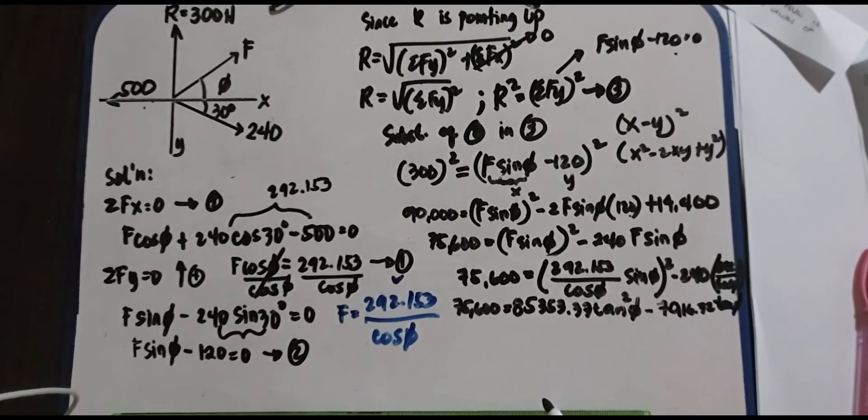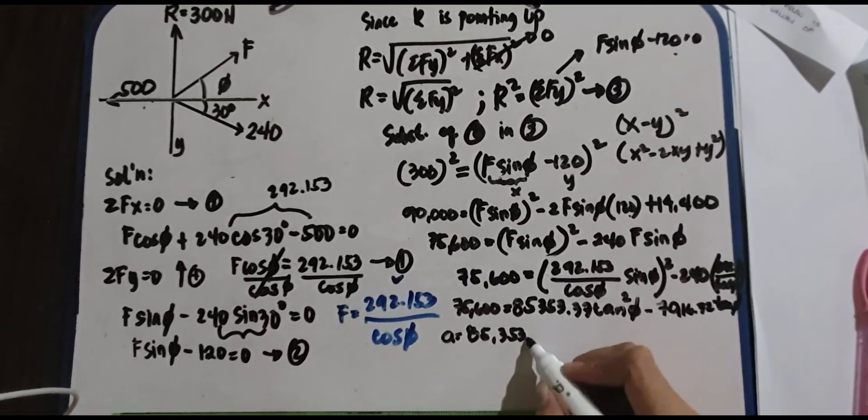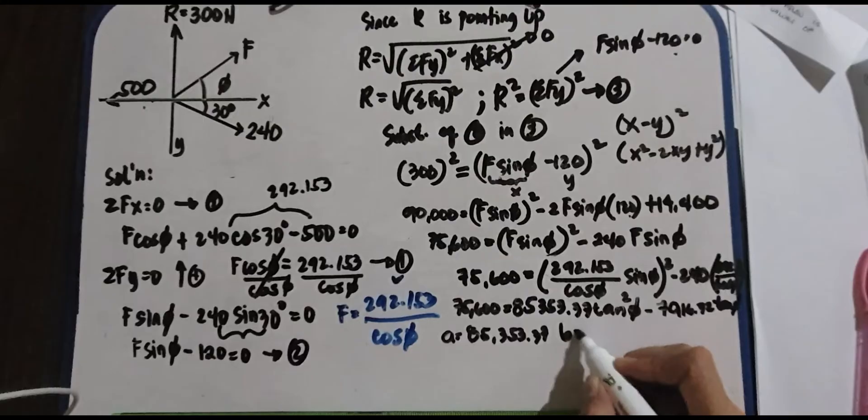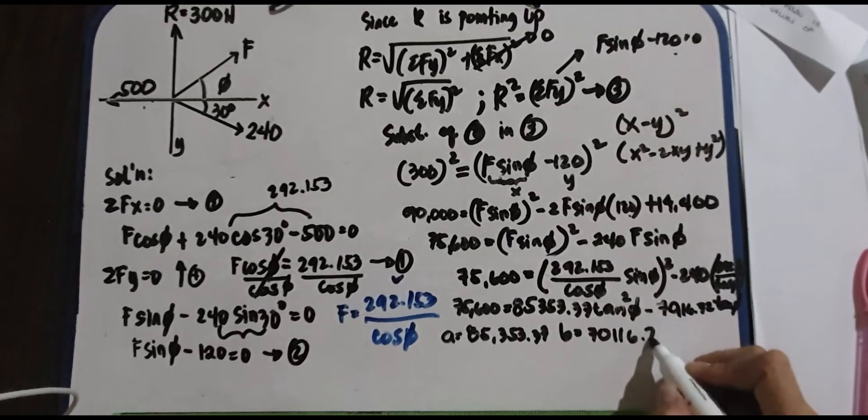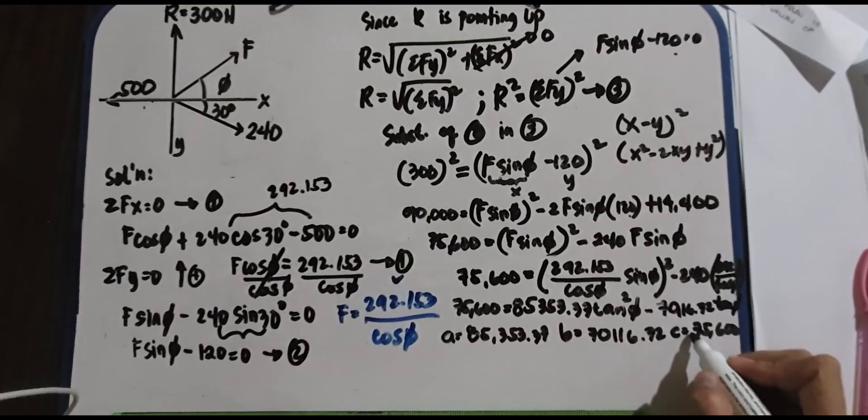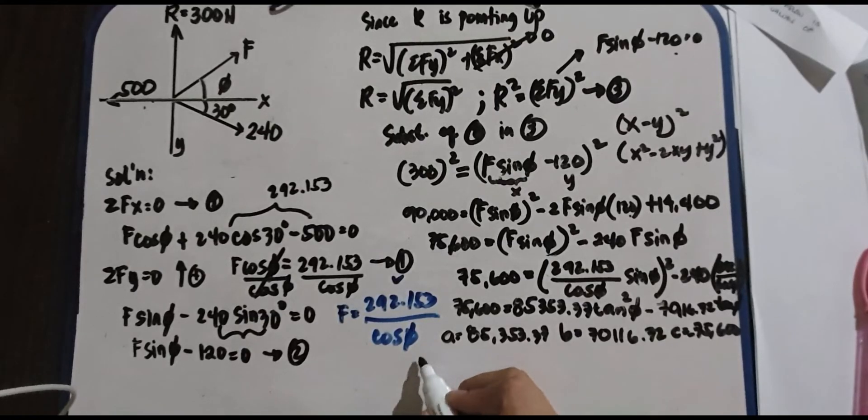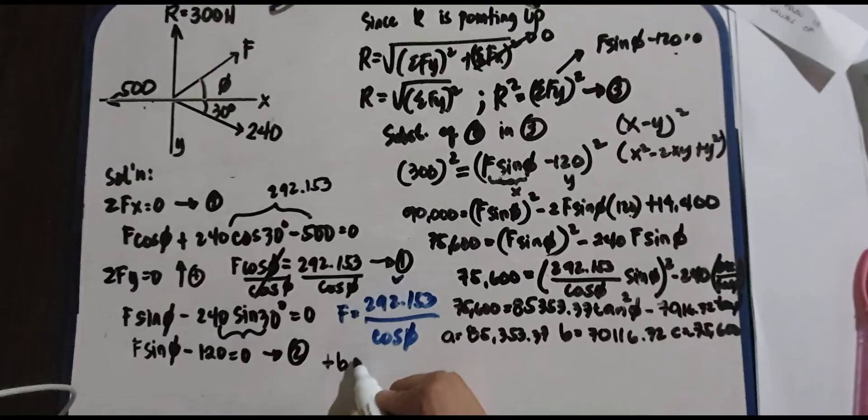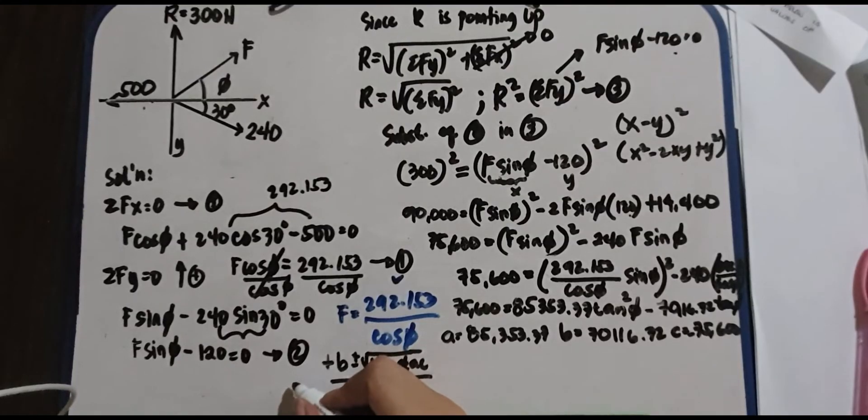Let's fix this. We have your A to be 85,353.37, your B is 71,116.72, and your C is 75,600, but remember when we move it to the other side, that is negative. Let's write the quadratic equation. We have negative B plus minus B squared minus 4AC all over 2A. So that is your tangent. You can see the theta there, tangent theta. What are the values there? Or tangent phi, because you can see it there.